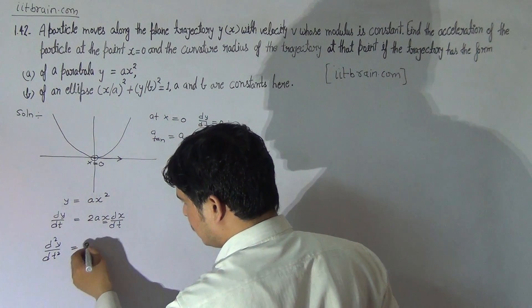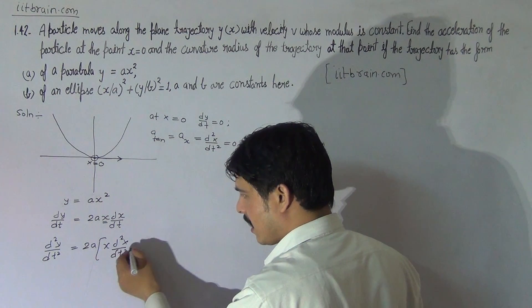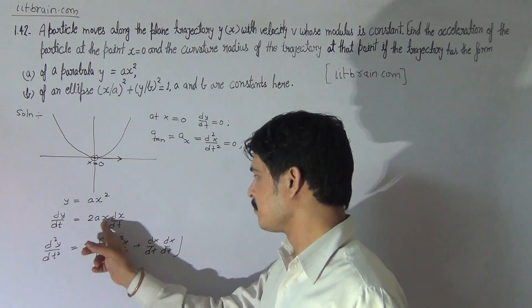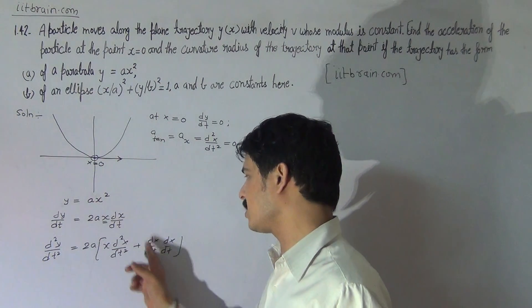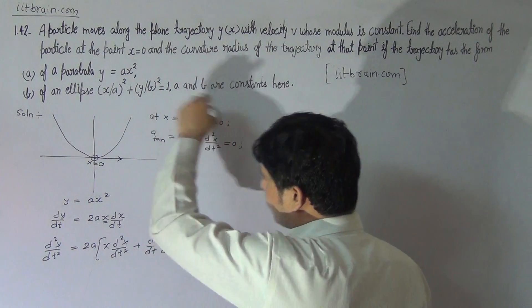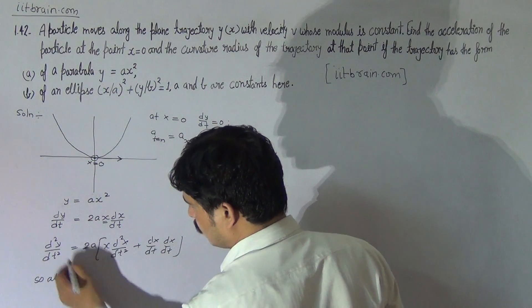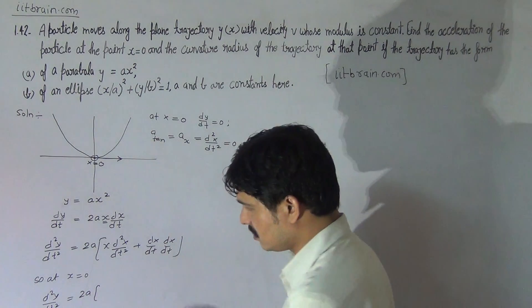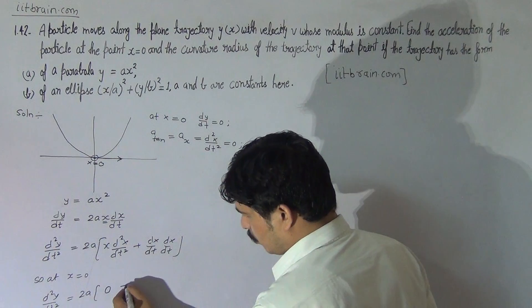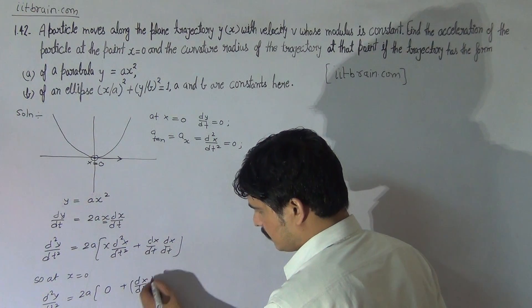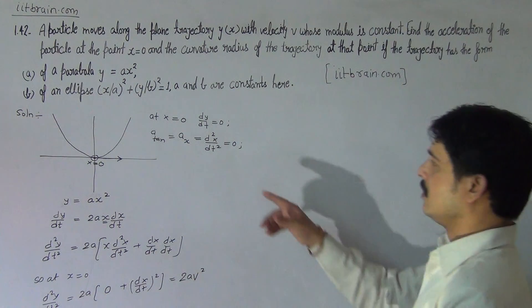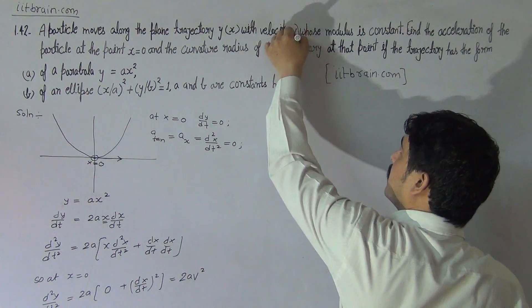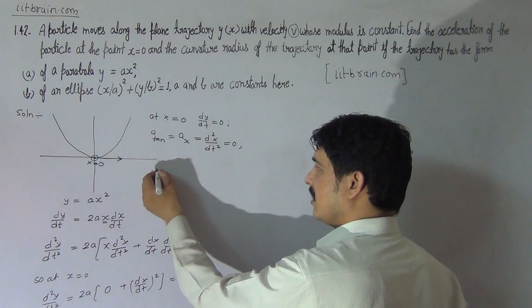Double differentiating, we get d squared y by dt squared equal to 2a times x times d squared x by dt squared plus dx by dt whole squared. This is by the product rule of differentiation. Then d squared y by dt squared is 2a times x times d squared x by dt squared plus dx by dt whole squared. And at x equal to 0, the y-component of acceleration equals 2a times dx by dt whole squared, which is 2av squared. Since at x equal to 0, dy by dt is 0, so complete velocity equals dx by dt, and since velocity is v, dx by dt equals v.